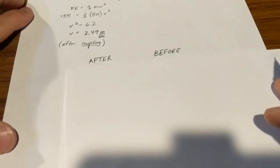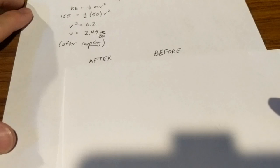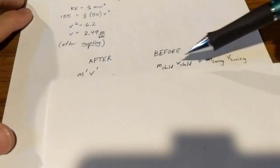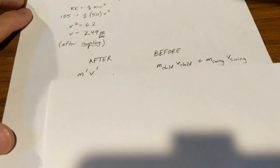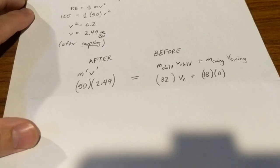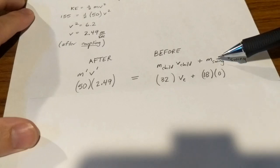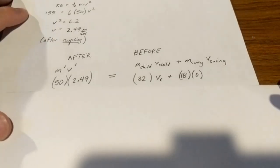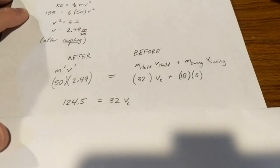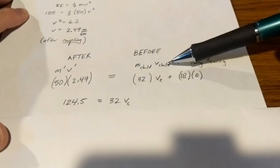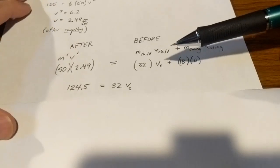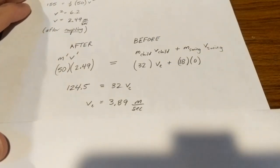And before the coupling, we had the child moving at some unknown speed, and we had the swing sitting still. So in the before, the momentum is the mass of the child times the speed of the child plus the mass of the swing times the speed of the swing. These are filled in here. The child's mass is 32. We don't know the speed of the child. The swing's mass is 18, and it was stationary before he jumped onto it. So we can conclude that the momentum before being equal to the momentum after means that his speed while he was running must have been 3.89 meters per second.